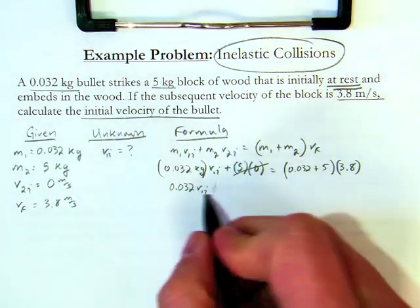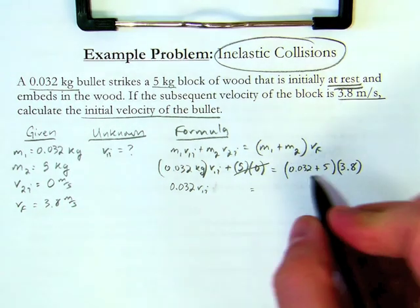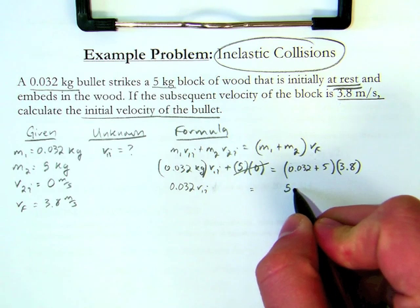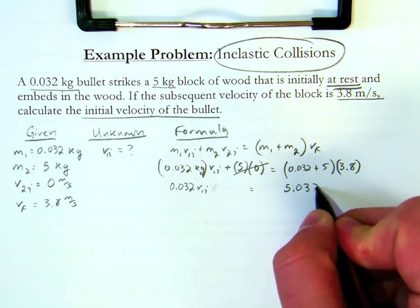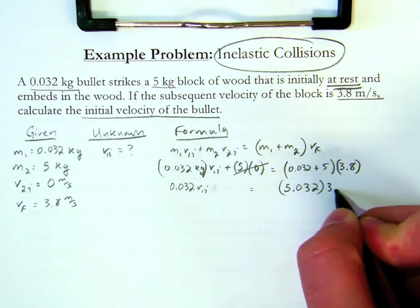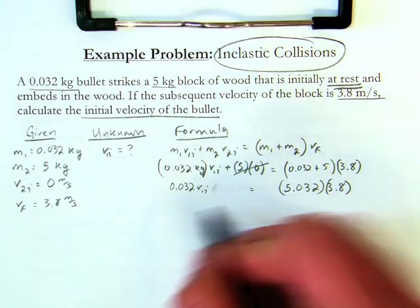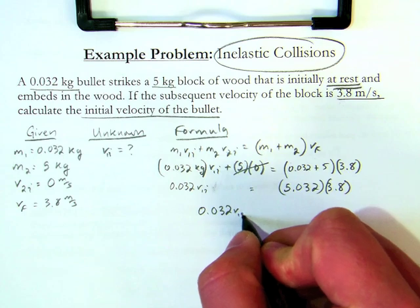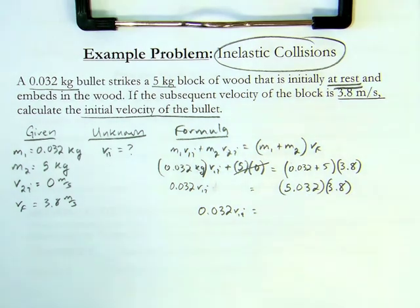That is equal to 0.032 plus 5 is 5.032 times 3.8. Continuing on down, 0.032 v1 i is equal to 5.032 times 3.8, which is 19.1216.